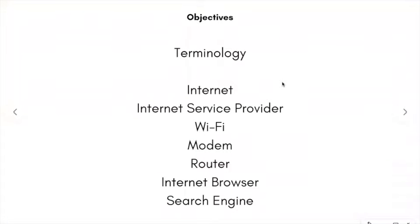The internet is, in short, a global network. To access the internet you have to pay for or find a free internet connection. If you pay to have the internet at your house, you're paying an internet service provider. Back in the day they used to be separate companies; now the internet service provider is also your TV and or phone provider. Back in the day you had to have a wired connection, but now you can access the internet wirelessly — this is called Wi-Fi. Many businesses have free Wi-Fi, and the library offers free Wi-Fi, even outside the building.